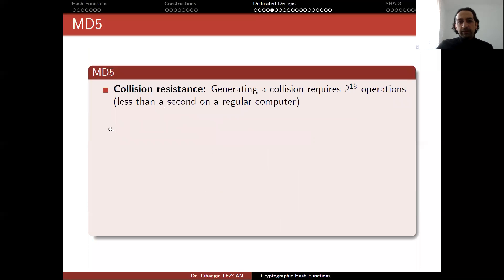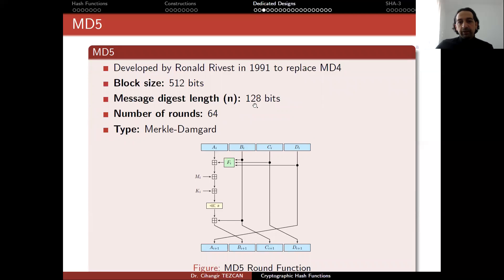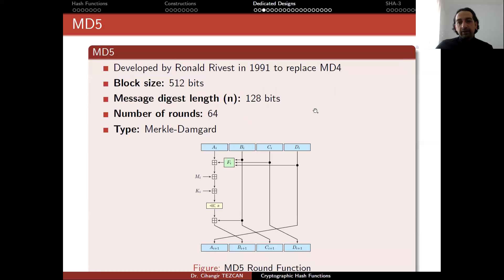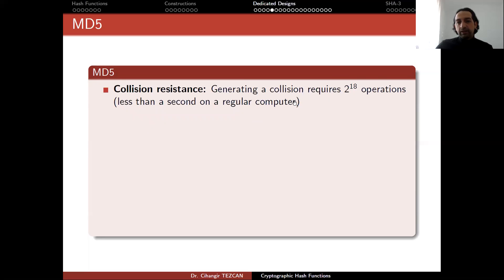It was very fast. But the problem is that although the number of rounds are increased, we can still find collisions. And generating a collision requires 2 to the 18 hash operations, and this takes less than a second on a regular computer. Even in a laptop, you can do it less than a second. And preimage resistance is 2 to the 123.4 operations. And recall that message digest length is 128 bits. So a brute force attack for the preimage resistance is 2 to the 128. But due to the attacks in the literature, this number is reduced to 2 to the 18 for collision. So as you can see, it is broken.